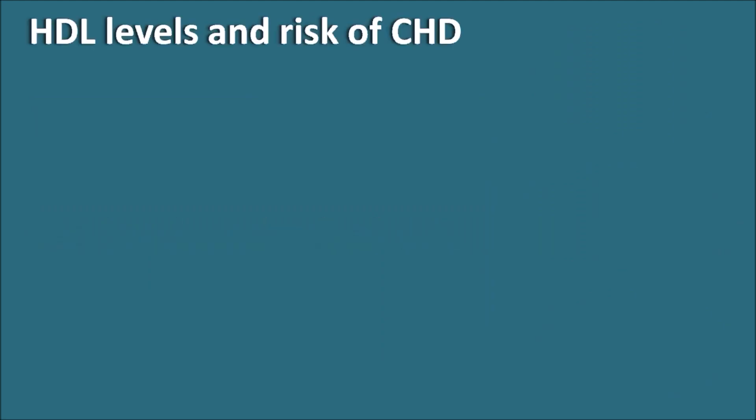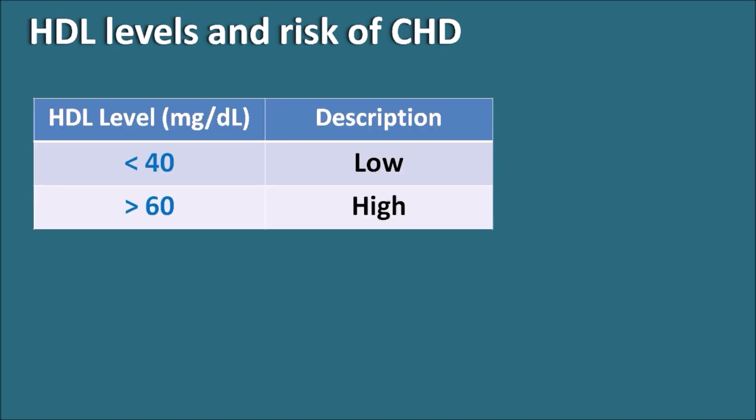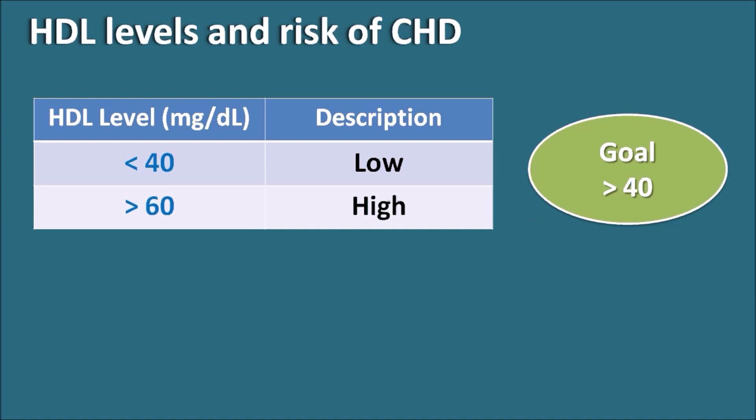HDL, the good cholesterol: HDL levels less than 40 mg/dL are considered low, and levels greater than 60 mg/dL are considered high. Since HDL is the good cholesterol, a sufficient amount must be maintained. The goal of treatment is to maintain HDL levels greater than 40 mg/dL, and it is always desirable to achieve levels near 60. HDL levels above 60 further decrease the risk of coronary heart disease by preventing atherosclerosis.